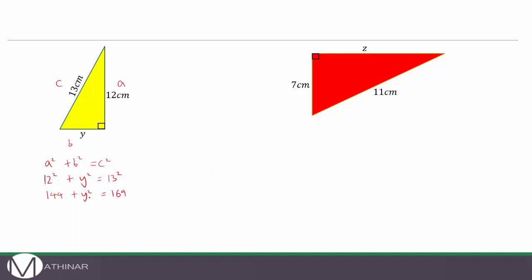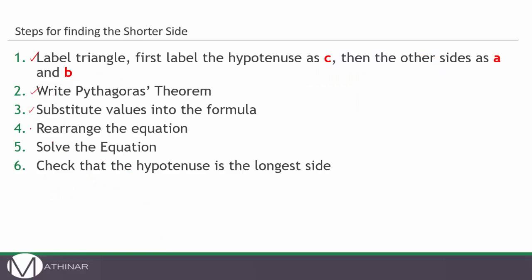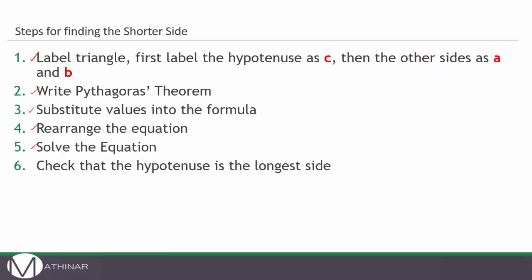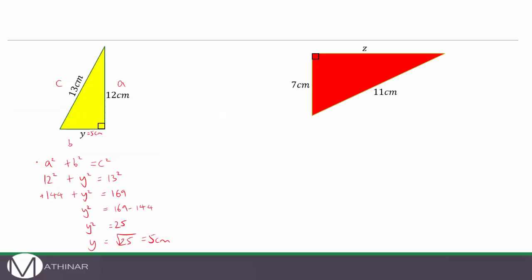Now we need to find Y squared. To get Y squared on its own we need to get rid of the positive 144 by subtracting 144 from both sides. That leaves Y squared equals 169 minus 144, which is 25. So Y squared is 25, meaning Y equals the square root of 25, which is 5 centimetres. Finally we check: Y is 5, the other side is 12, and the hypotenuse is 13, which is the longest side — so that check is done.